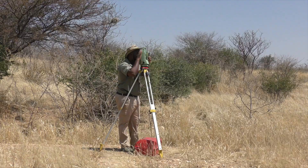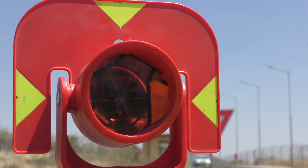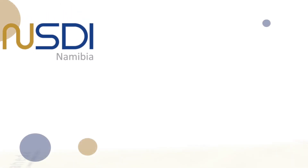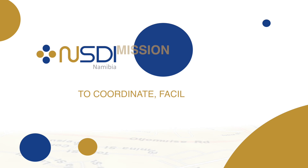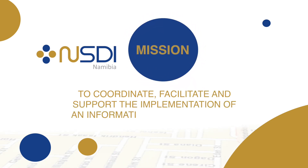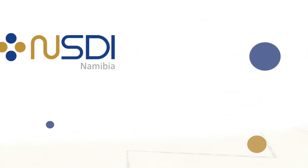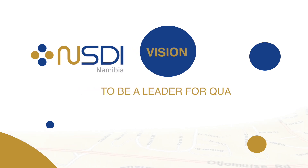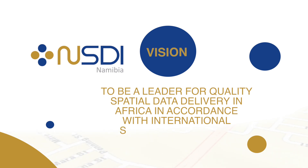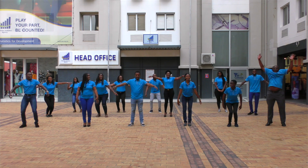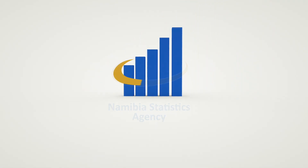Geographical data collected by the NSA and other data producer institutions is vital for producing quality statistics. The mission of the National Spatial Data Infrastructure as outlined in the first NSDI Strategic and Action Plan is to coordinate, facilitate and support the implementation of an information infrastructure. This ensures efficient production, use, maintenance and dissemination of relevant, quality and accurate spatial information that is fit for purpose, particularly in providing evidence-based decision-making at all levels of society. The vision is to be a leader for quality spatial data delivery in Africa in accordance with international standards and best practices. Together, we are building a spatially enabled nation. Join this government initiative and let's build a spatially enabled nation.